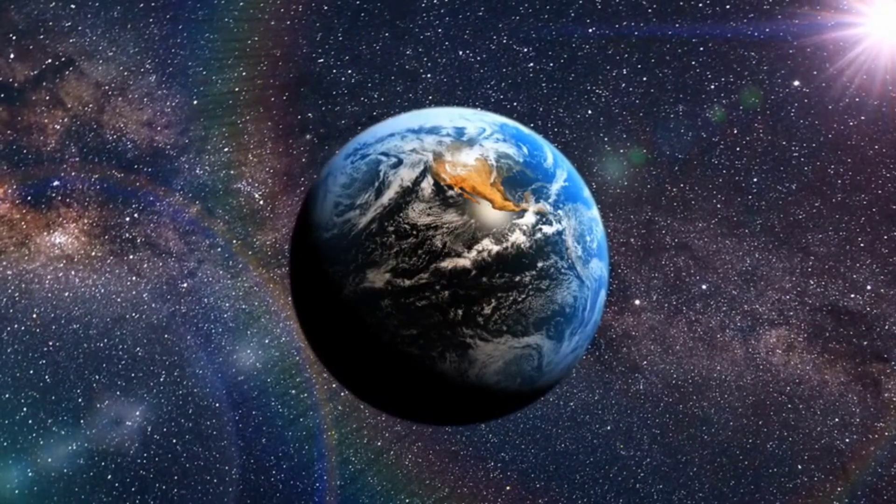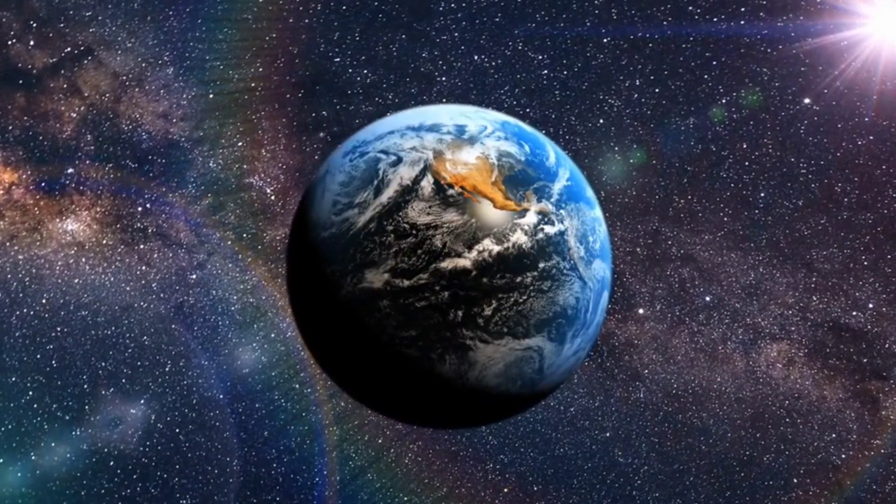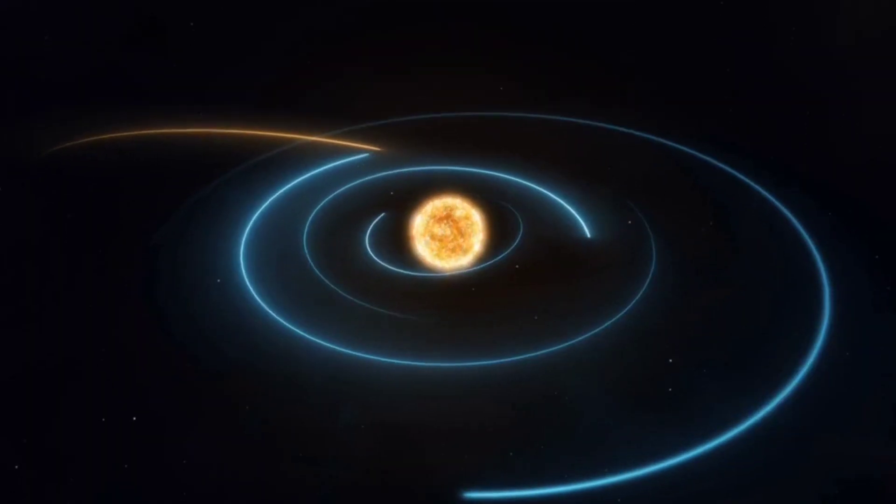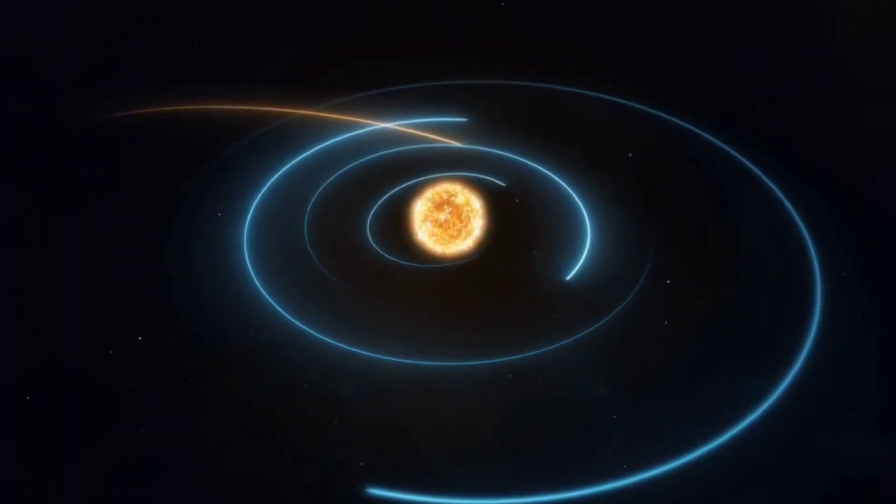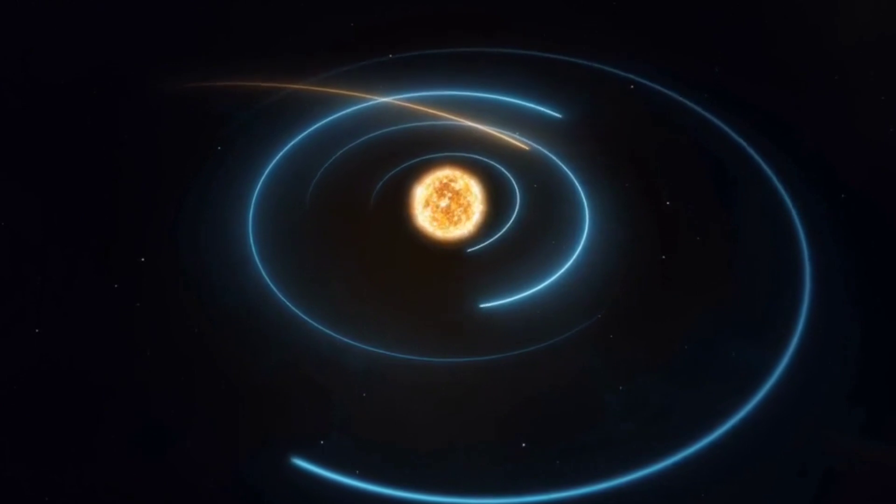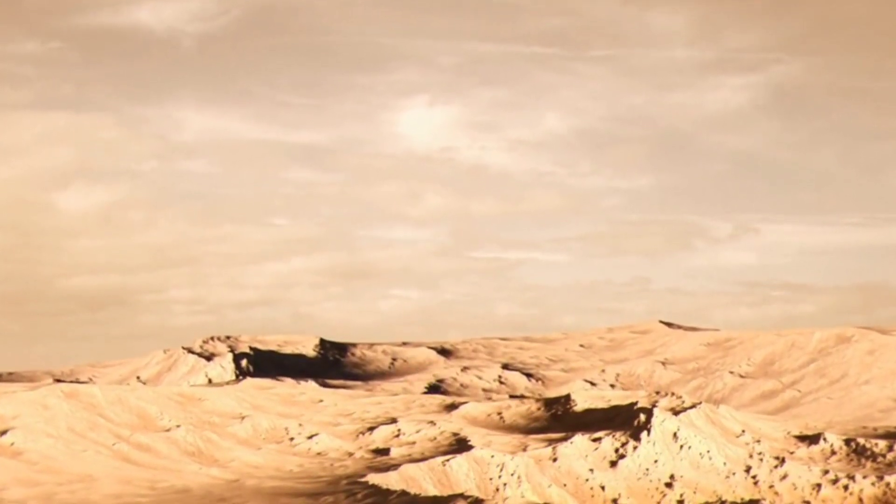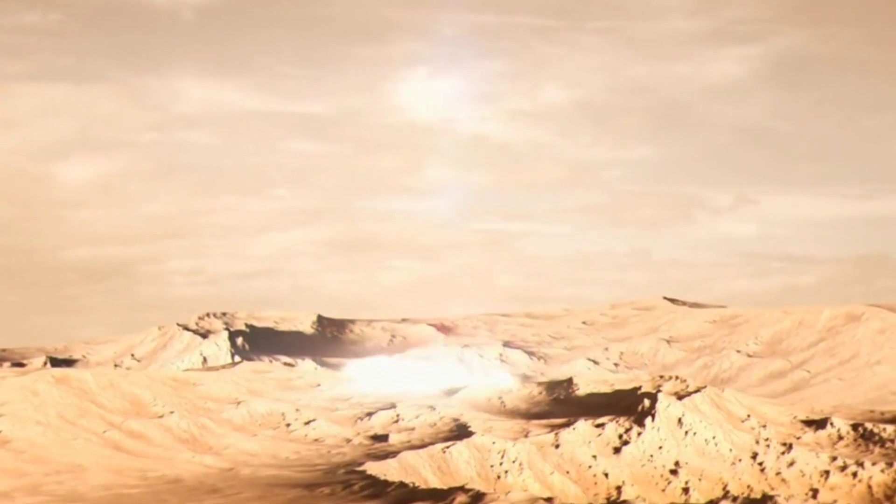In order to comprehend why the ancient moon was closer to the earth, we must first understand the process of its formation. Around 4.5 billion years ago, a catastrophic event occurred in our young solar system. A Mars-sized object, often referred to as Theia, collided with our planet in a colossal impact.